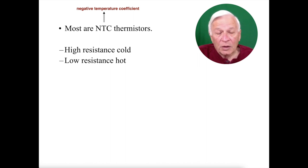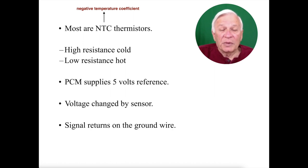What does that mean? Well, it means high resistance will show cold and low resistance will show hot. The PCM supplies a 5 volt reference, and that voltage is changed by the sensor, so it's going to change from 5 volts to a different voltage. Now, the signal return is on the ground wire.